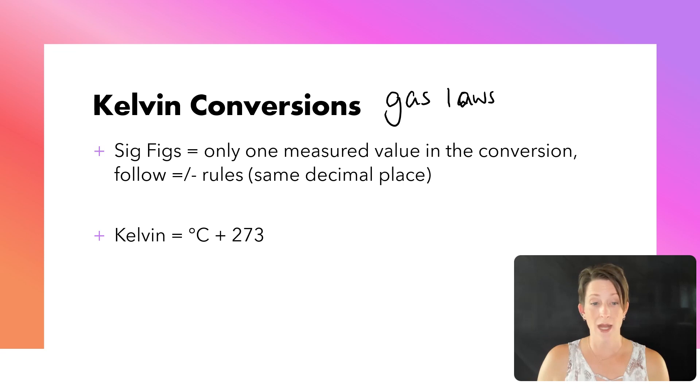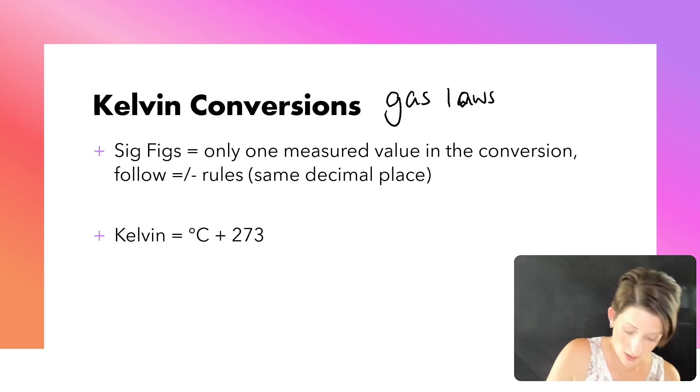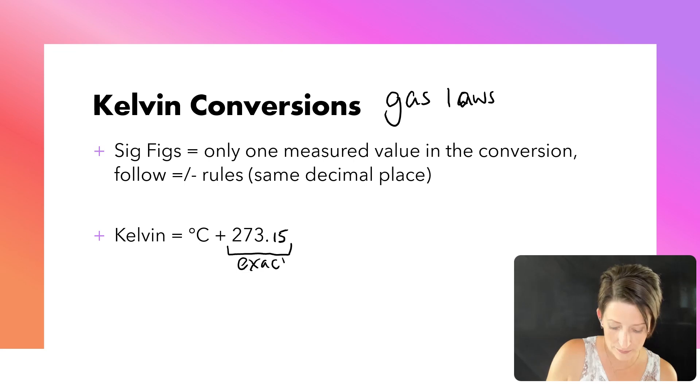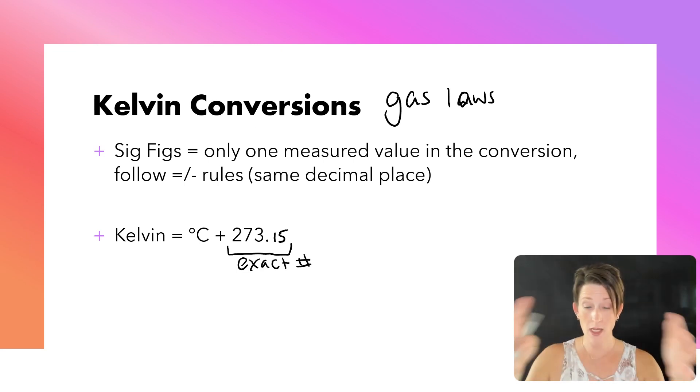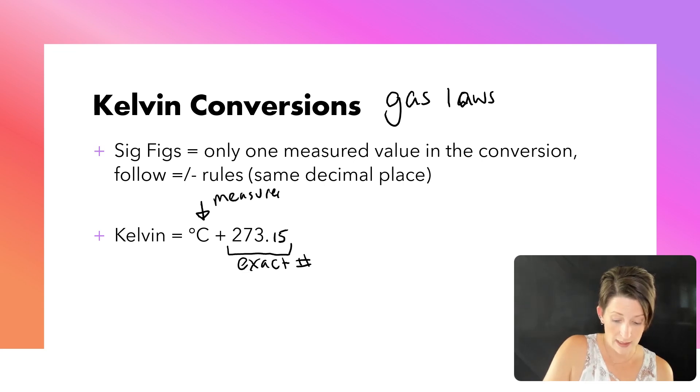When we are looking at our sig figs, only one measured value is going to be in that conversion. So Kelvin, that 273.15, my bad, this is considered an exact number. Based off the scientific community, it is set that is the number for Kelvin. Therefore, we only have one measured number, which means that our sig figs are going to come based off that Celsius.